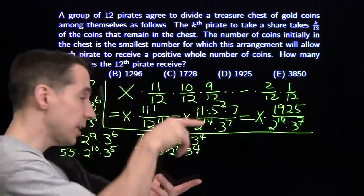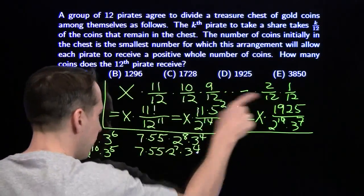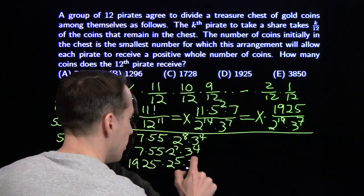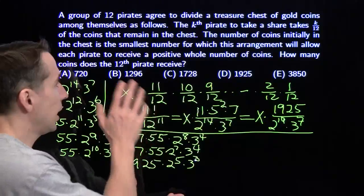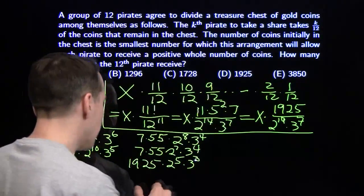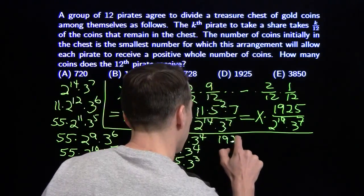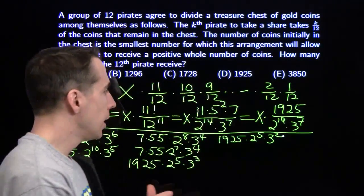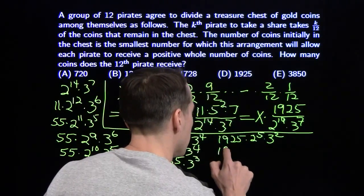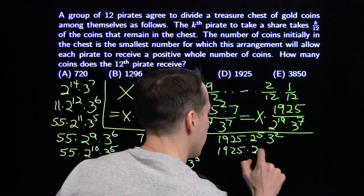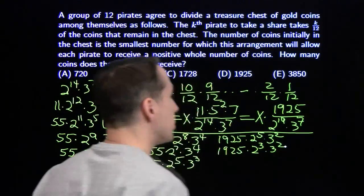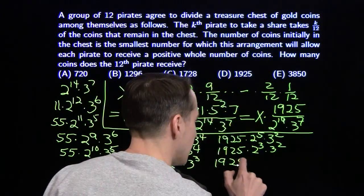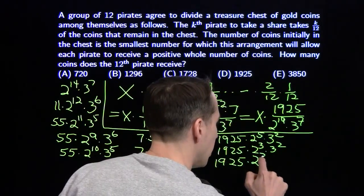The seventh pirate takes 7/12, leaves 5/12. We know 5 times 7 times 55 is 1925, so at this point we have 1925 times 2 to the 5th times 3 cubed. The eighth pirate takes 8/12, leaving 4/12 (one third): 1925 times 2 to the 5th times 3 squared. The ninth pirate takes 3 quarters, leaving one quarter. The tenth pirate takes 10/12, leaving 2/12 (one sixth). At each step, the pirate walks away with an integer number of coins.